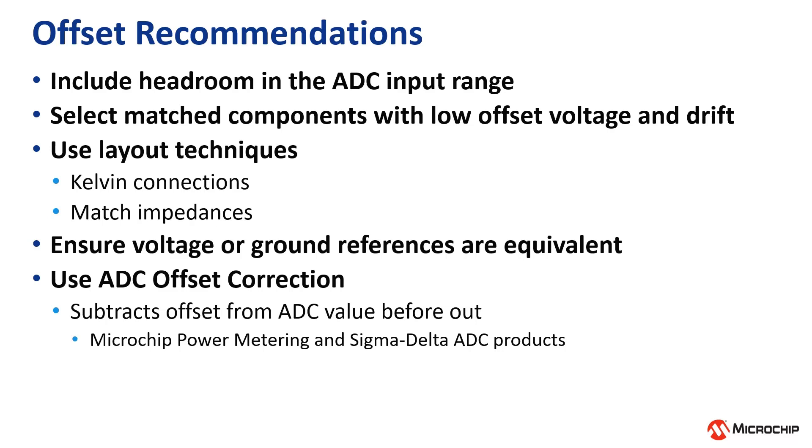Here are some recommendations to make your design more immune to offset. Include headroom so that the input will still fall within the ADC input range. For critical circuits, select components that are well-matched and have low offset and drift. Use layout techniques, such as Kelvin connections and matched impedances. Ensure that any voltage or ground references are equivalent. You can use an ADC with offset correction.